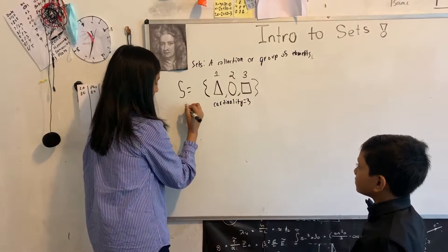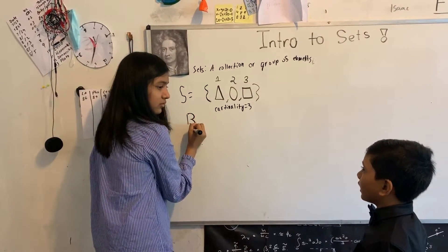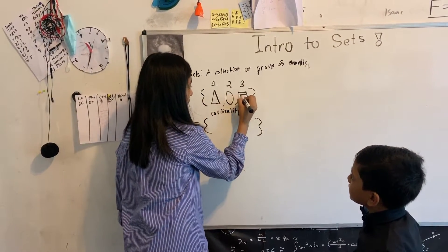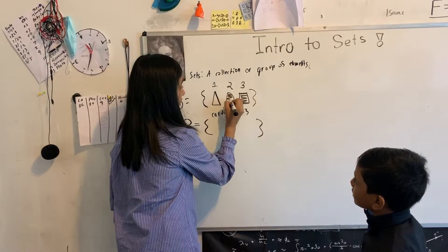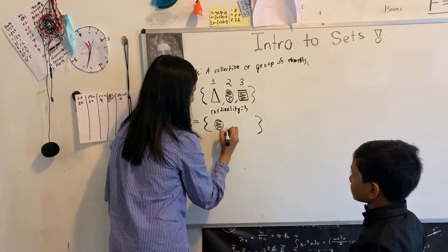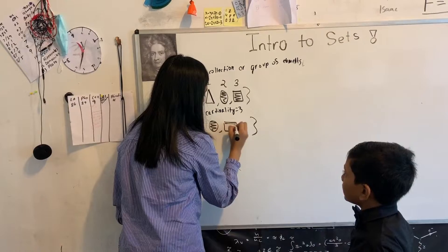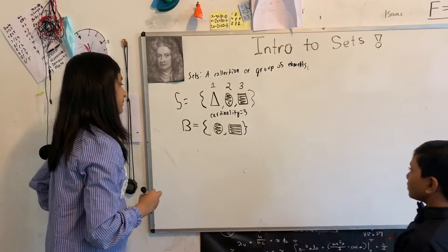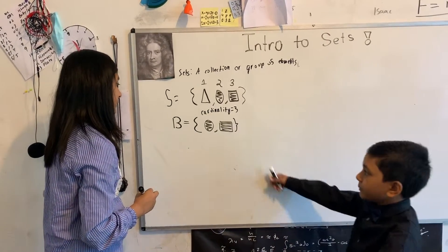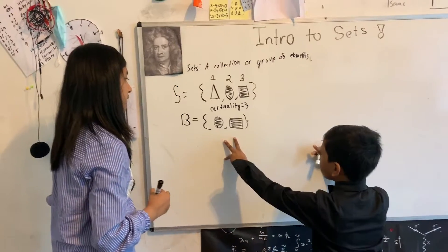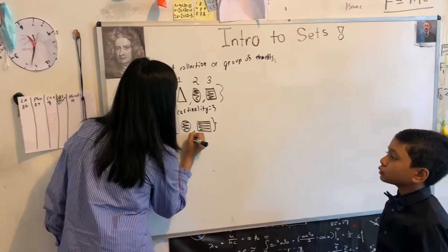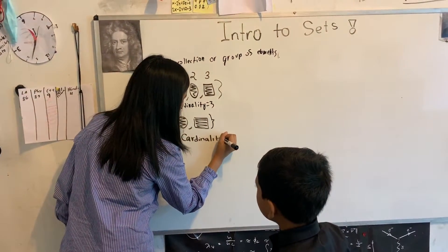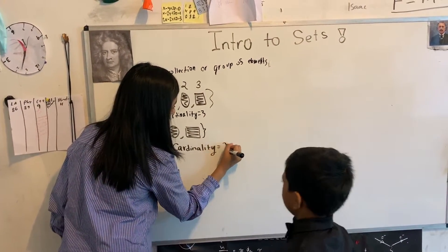So let's draw another one. Maybe we can name this black. Okay. And maybe we can shade in this square and circle. Okay. So I'll move that curly brace to the left. So now we have a new set B that consists of both the shapes that are black. So the cardinality for this is? Two, I'd say.